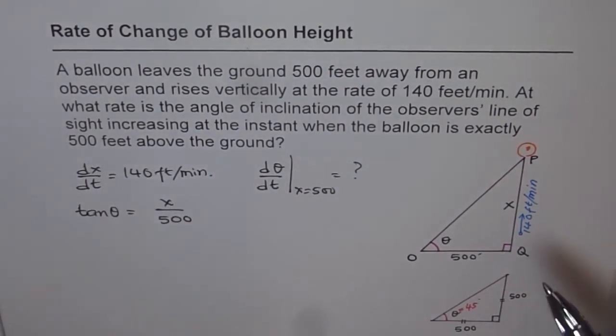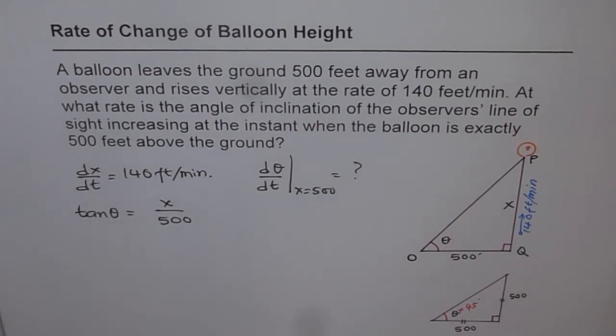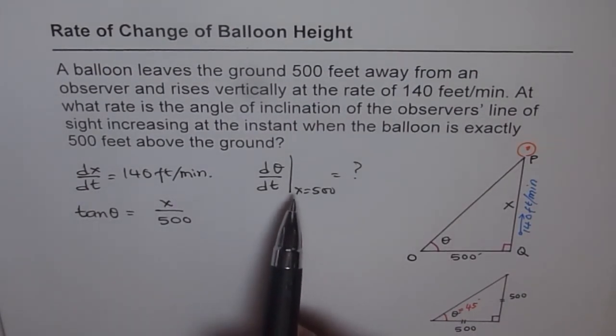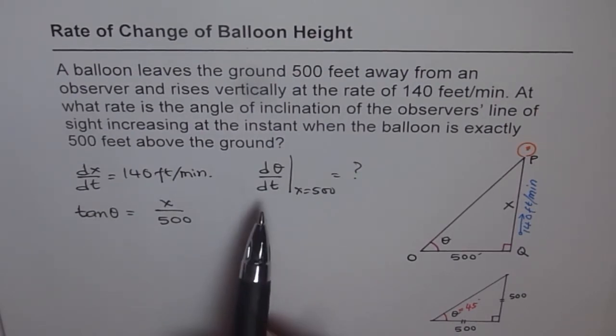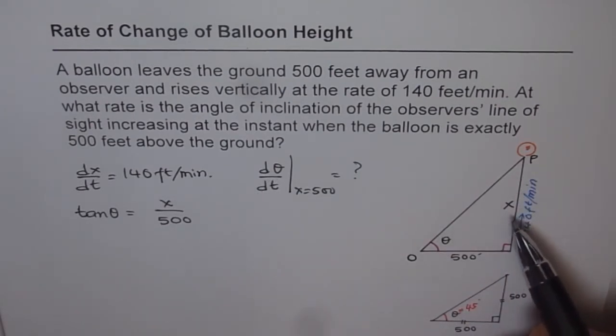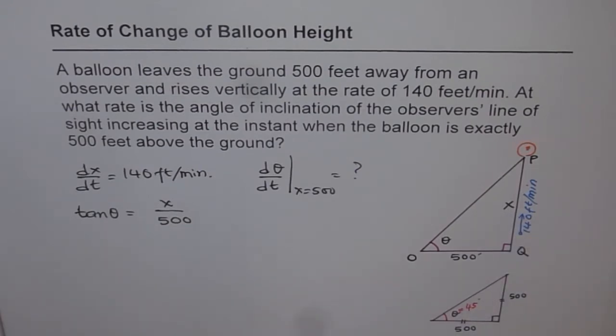So first step is sketch a diagram. Second, write down what is given, what you need to find. And then from there, figure out what type of equation you are required to solve the problem. Now since you need to find rate of change of theta with respect to this height, you want a relation between theta and height. And that is a good relation to start with.